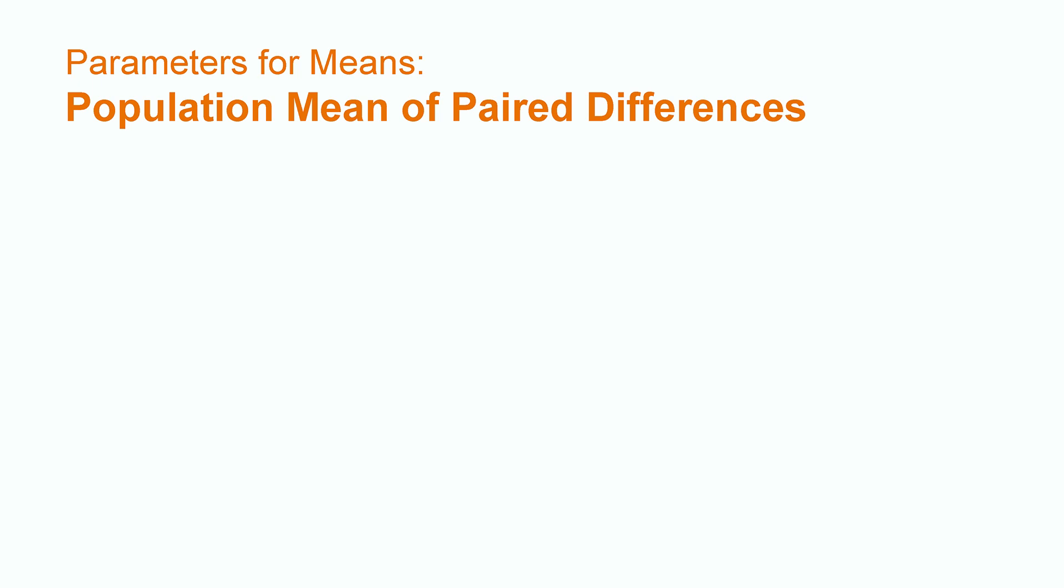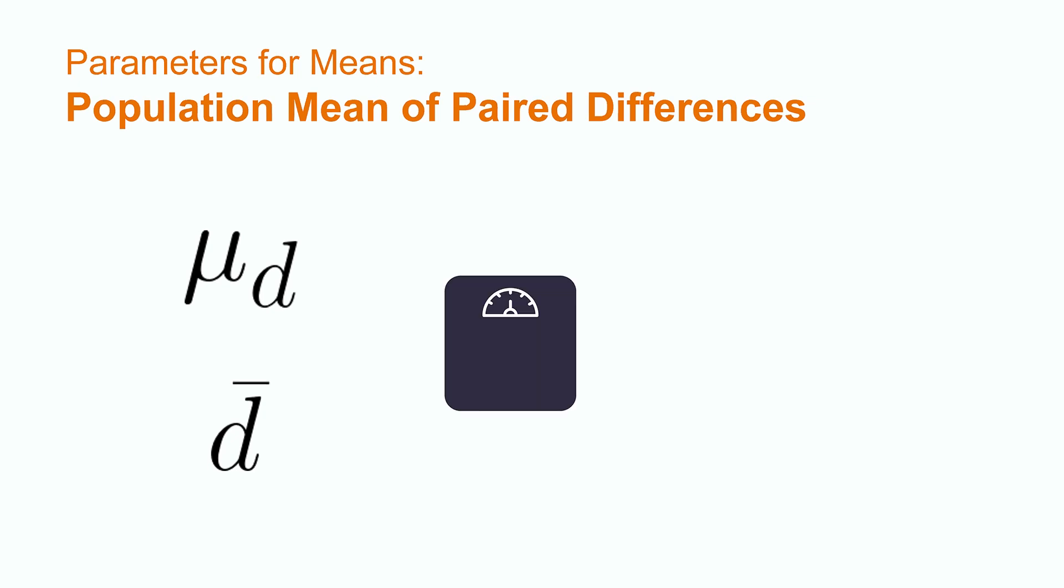The parameter that represents the mean difference of paired data is mu sub d and the statistic is d-bar. An example of a research question interested in the value of mu sub d would be, what is the difference in weight for people before versus after starting a diet program? Or, what is the mean difference in income for graduates before versus after obtaining a master's degree?